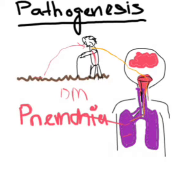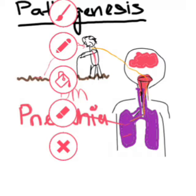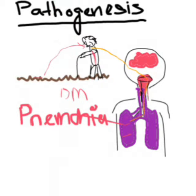After some time the pneumonia worsens, resulting in a lot of pus formation in the lungs, which is also known as a lung abscess. This can also lead to empyema of the lungs.